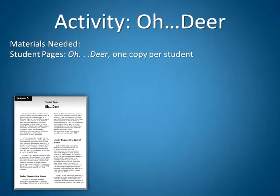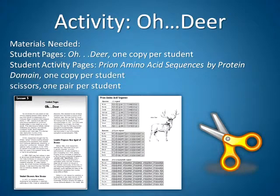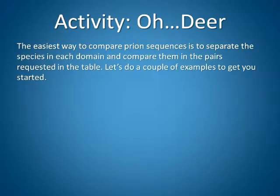Materials needed: student pages "Oh Dear" — one copy per student; student activity pages — Prion Amino Acid Sequences by Protein Domain — one copy per student; scissors — one pair per student. Give each student a copy of the student pages and ask them to read the information. Review the content with the class.